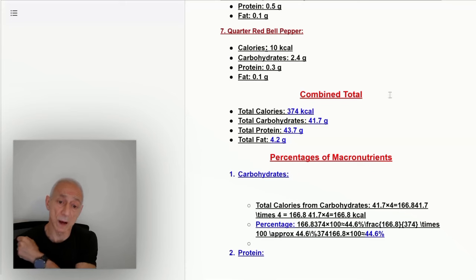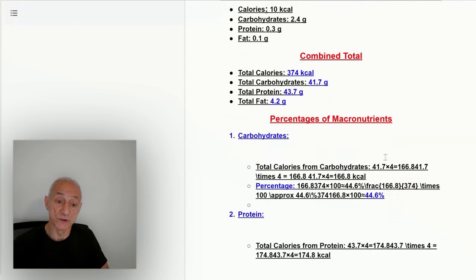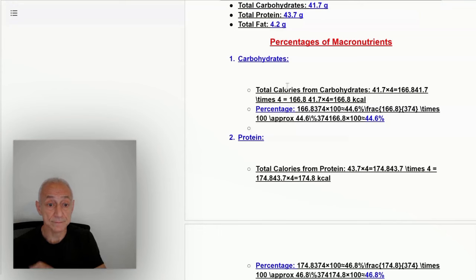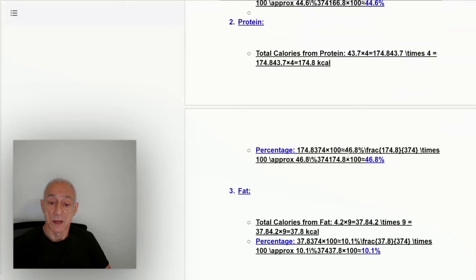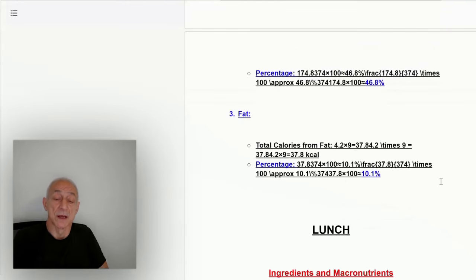The total combination of all the macronutrients for breakfast is 374 calories, 41.7 grams of carbohydrates, 43.7 grams of protein, and 4.2 grams of fat. As a percentage of macronutrients, my breakfast is about 45% carbohydrates, 47% protein, and 10% fats. These are just estimates, close enough.